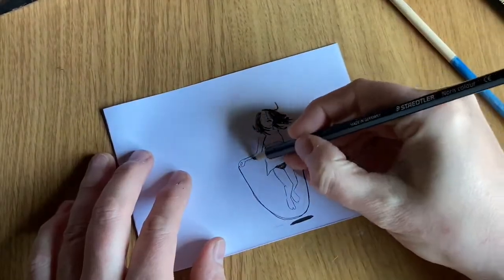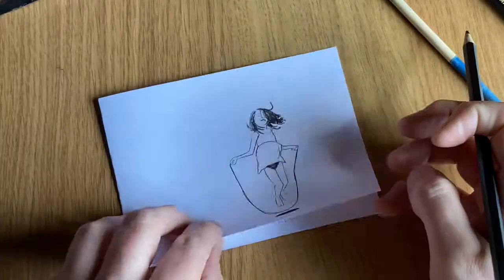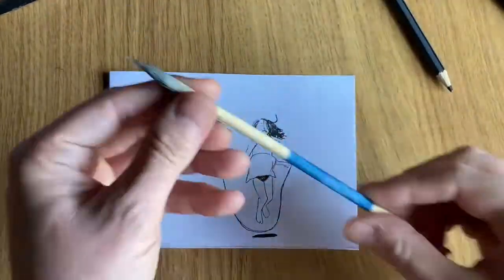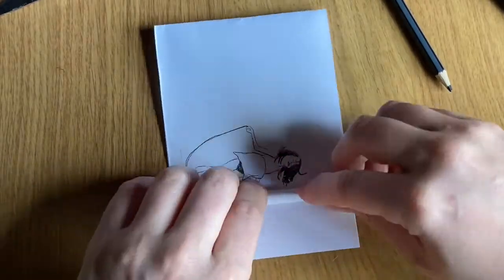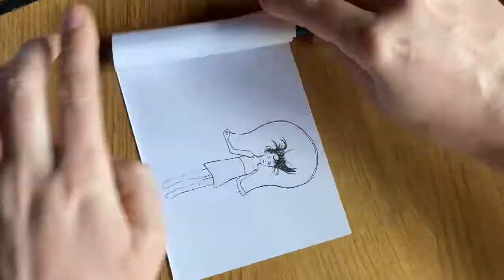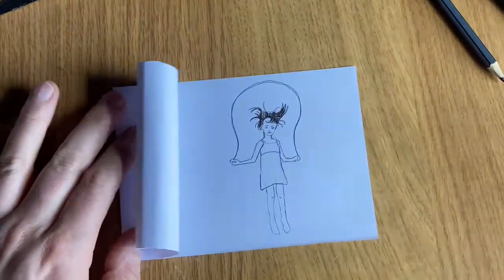When you know the basics of the movement, you can try something a little bit more difficult. Here I'm still using the bouncing ball technique but I've just done a little skipping girl. It's pretty much the exact same principles of the bouncing ball but just a little better drawn.